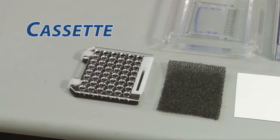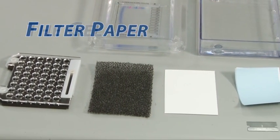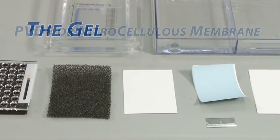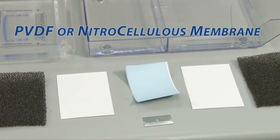To make the transfer sandwich, you will need a cassette, sponges, filter paper, the gel, and your choice of either PVDF or nitrocellulose membrane.